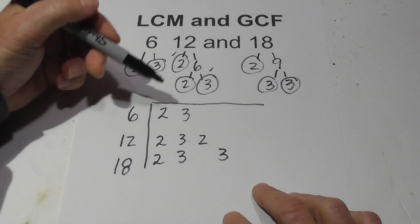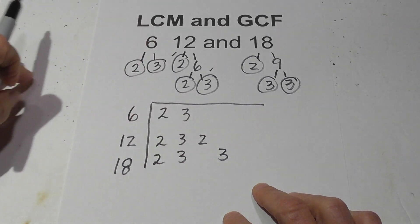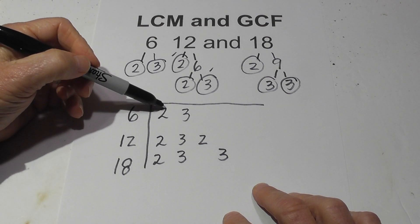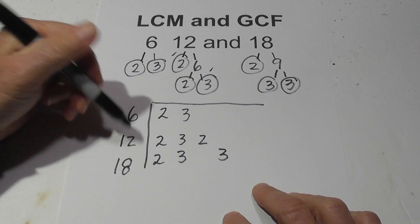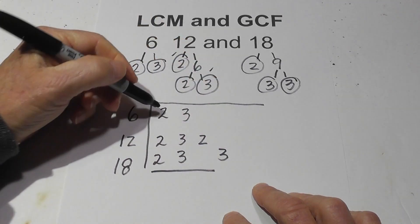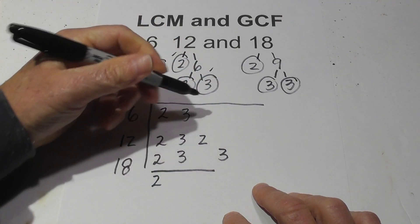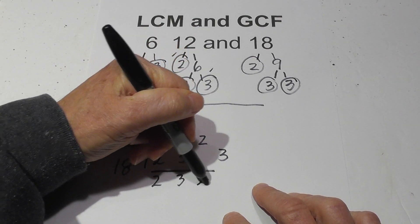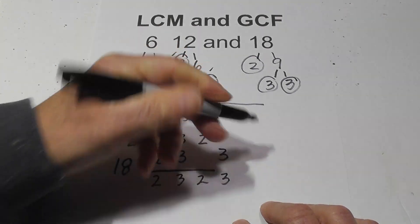Now for the LCM, basically all you do is multiply these numbers together. However, if you have two or three numbers in one column, only bring down one number. So I'll bring down a 2, I'll bring down a 3, I'll bring down a 2, and then bring down the 3.